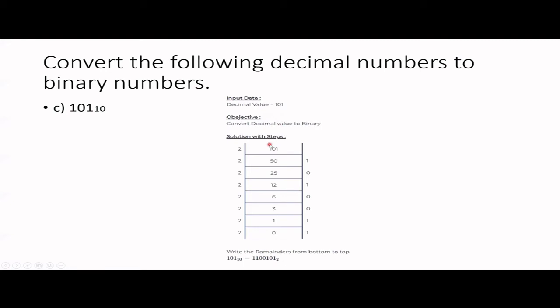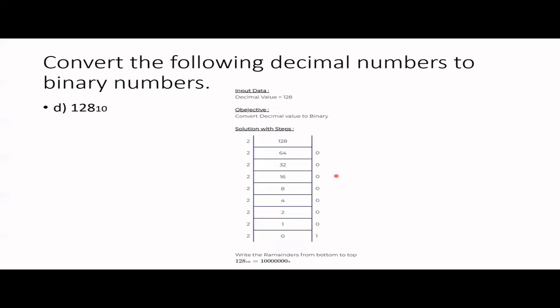Next: 101. Same method — continuously divide by 2, writing remainders until the quotient reaches 0. Then write the answer bottom to top: 1, 1, 0, 0, 1, 0, 1. You can pause the video, do it yourself, and then check. Next: 128. Divide continuously by 2 and you will get 1 with all zeros. If you know the place values — 2⁷ = 128 — you can directly write a 1 in the 7th place with the rest zeros.